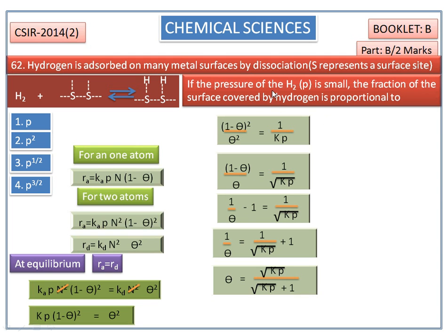The question is, if the pressure of H2 is small, the fraction of the surface covered by hydrogen is proportional to. If the pressure is small, this term, that is √(KP) value becomes negligible.